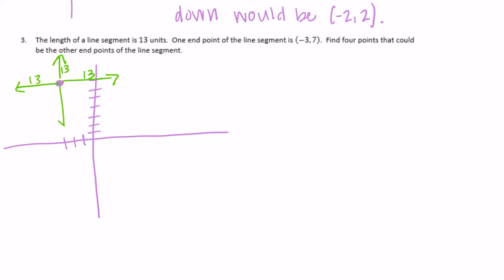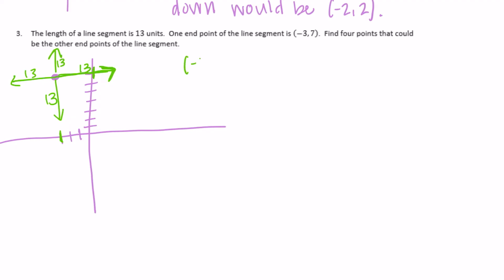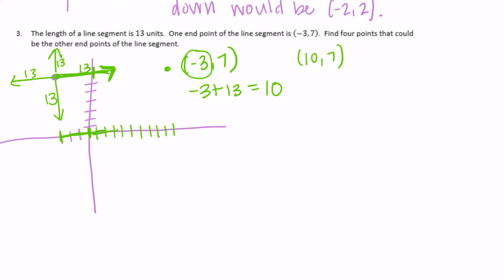Starting with (-3, 7), if we wanted to move to the right 13 units, that means moving along the x-axis 13 units. So negative three plus thirteen equals ten. My y-coordinate stays the same, so we get the point (10, 7). You can basically do this by just adding or subtracting 13 to each x or y coordinate.